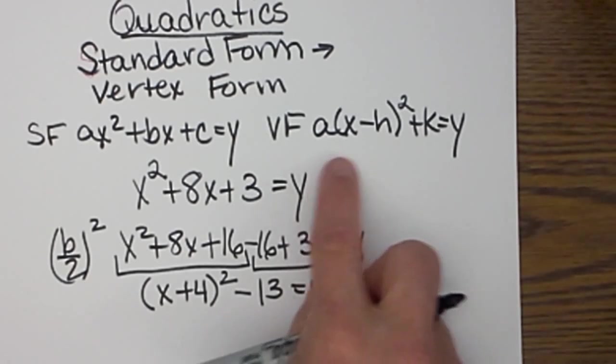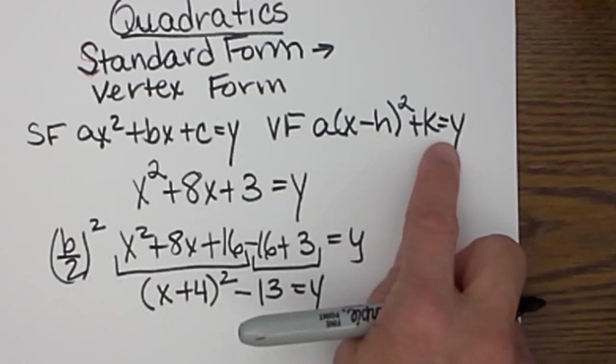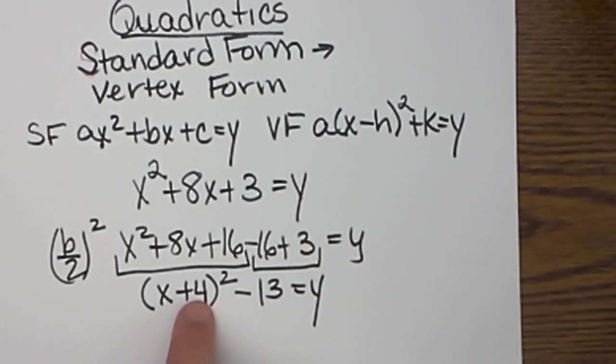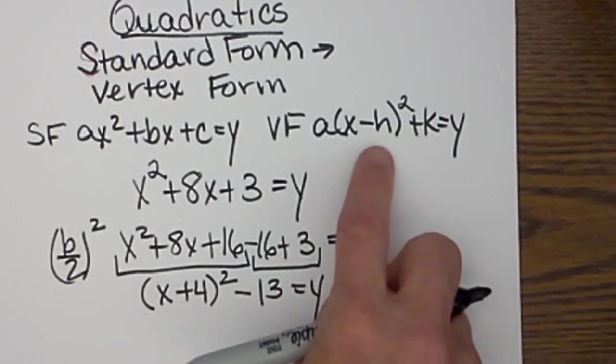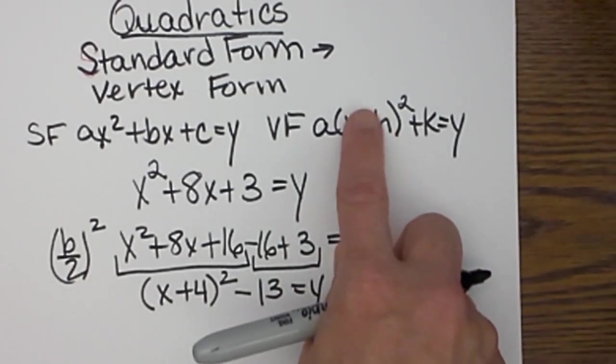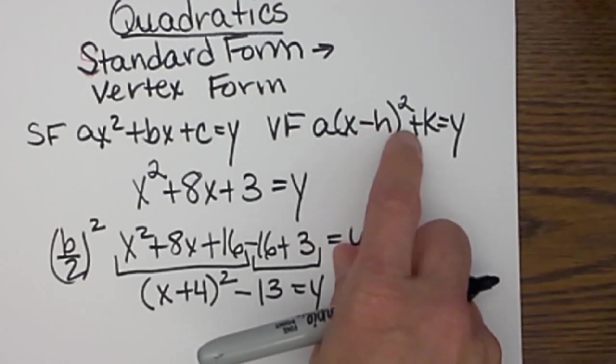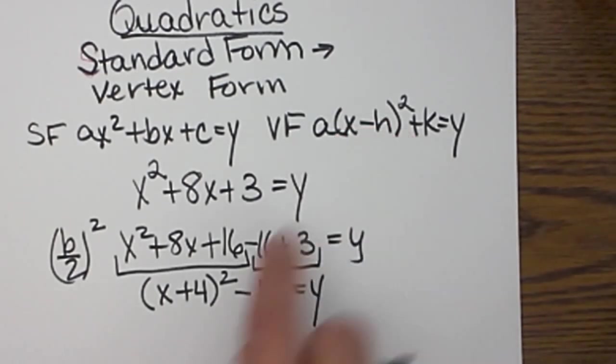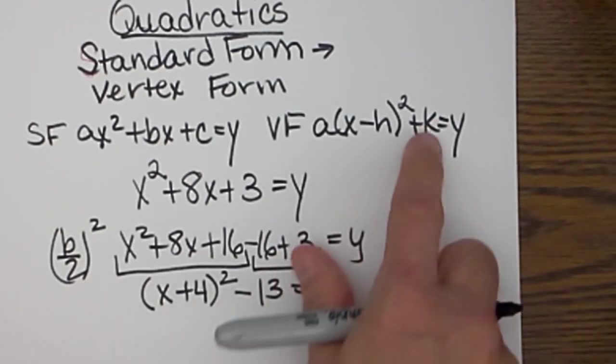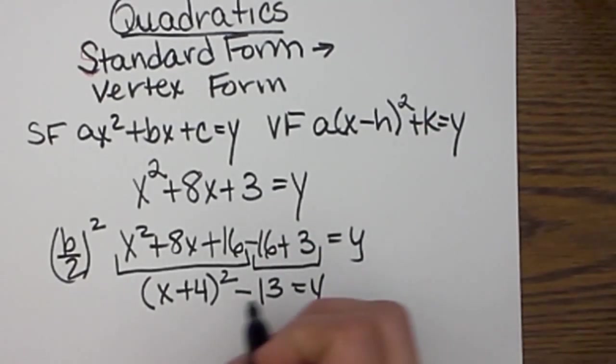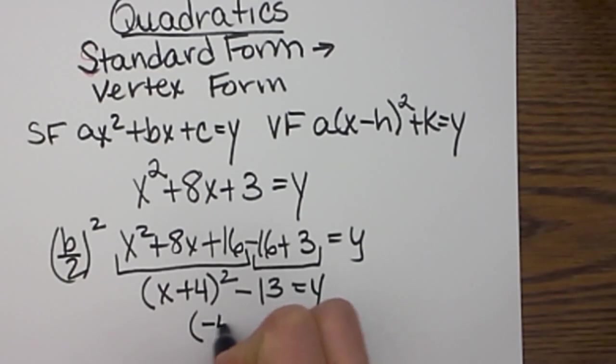Now as you can see we have our quadratic in vertex form, where h is negative 4 and k is negative 13. h is always the opposite sign of what we see in the equation because it is x minus h, so that would be x minus a negative 4, and then k is the same value that we see, which is negative 13. So our vertex on this one would be (-4, -13).